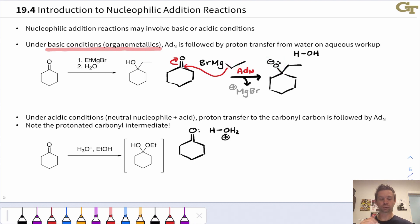To get the neutral product out, we treat with water or sometimes with a weak acid, and proton transfer to that alkoxide oxygen gives the neutral alcohol. So this is a typical mechanism under basic conditions where the first step is nucleophilic addition and the second step is proton transfer.